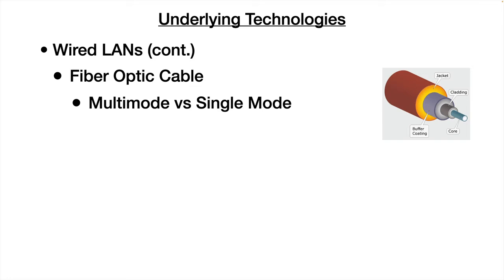When we talk about fiber, there's multi-mode and single mode. Everything seems backwards in fiber optic cable — if someone offered you single mode or multi-mode fiber, most people would say multi-mode because multi sounds like many and maybe faster. In reality, single mode fiber has a smaller core and uses a laser to send the beam straight down the center. With multi-mode, it could be plastic with a light-emitting diode instead of a laser, and the signal bounces around within the cladding, which does not give as good a signal quality.